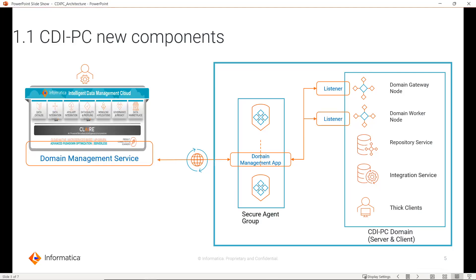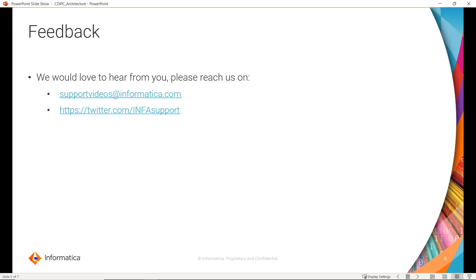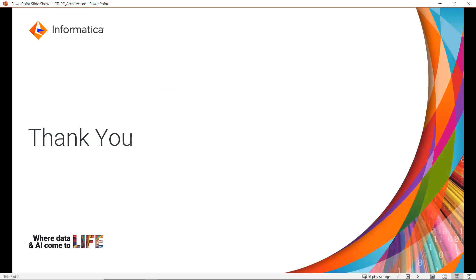This is all about the CDI PC architecture. The key new components to remember are: Domain Management App on the secure agent machine, Domain Management Service on IDMC, and the Listener or Cloud Connect service. The CDI PC domain itself can be imagined the same as an existing on-prem PowerCenter domain with all PowerCenter services and thick clients. You can provide feedback by visiting supportvideos at the Informatica community. You can also reach us on Twitter. Thank you for watching the video.